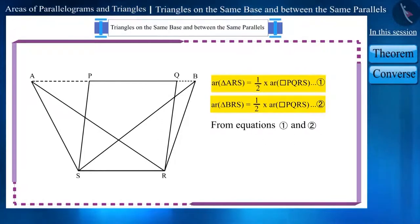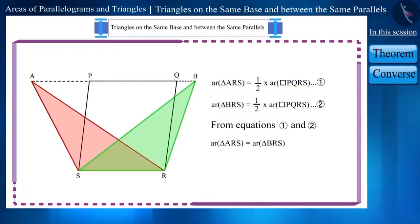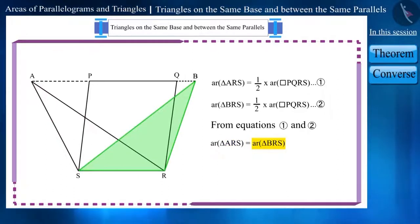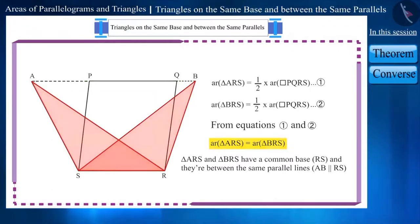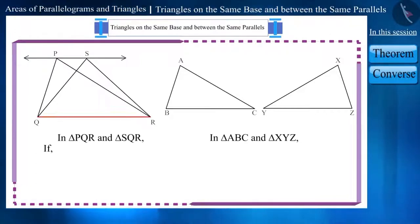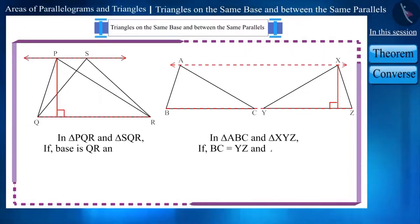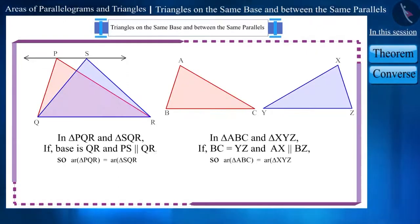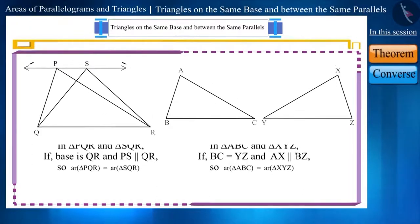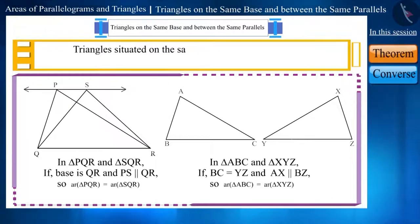If we look at these two triangles, then we can say that the area of these two triangles is equal. That is, the area of triangle ARS and triangle BRS, which are situated on the same base RS and between the same parallel lines AB and RS, is equal. You can check using other triangles situated on the same base and between the same parallel lines, and you will find that their area is also equal. Thus, we have reached a conclusion in the form of a theorem which says: triangles situated on the same base and between the same parallel lines are equal in area.